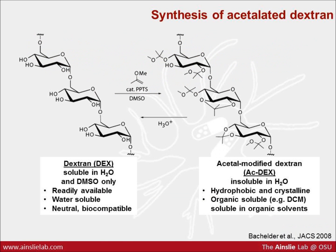Ac-dex is formed with a reaction of dextrin in the presence of an acid catalyst with either 2-ethoxy or 2-methoxy propene. When we react dextrin, we get cyclic and acyclic acetals. Dextrin itself has been used for decades as a plasma expander and it's FDA approved for that purpose. With our modification, ac-dex, we get a water-insoluble polymer that can be used to form a variety of different constructs.